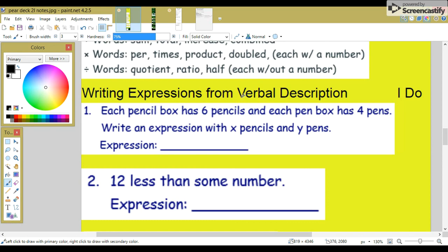Writing expressions for verbal descriptions. Number one: Each pencil box has six pencils and each pen box has four pens. Write an expression with x pencils and y pens. So we're saying the pencils are x and the pens are y. How many pencils are in each box? We have six. So six pencils in each box. And, and is a plus sign for y. That's your expression.